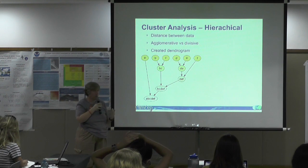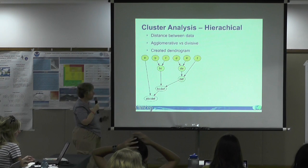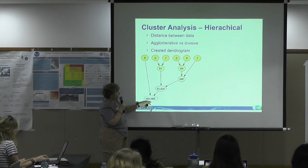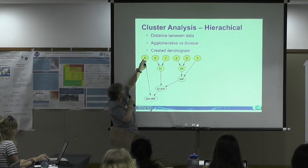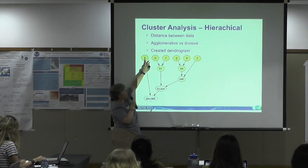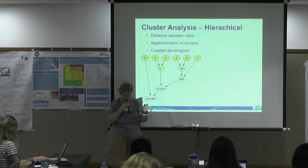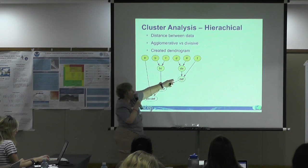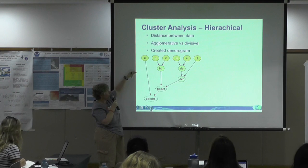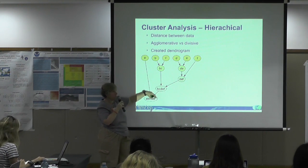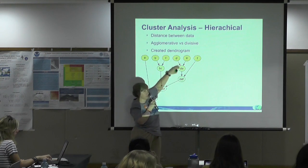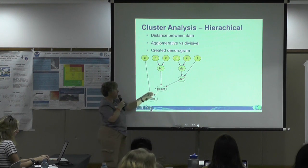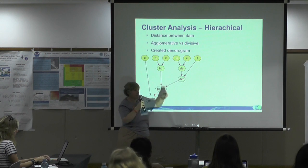The most common form of cluster analysis people come across is probably the dendrogram, which is hierarchical. There are two ways to build these: agglomerative, where you start with everything separate and find things that bring them together to build ever-larger clusters — at some point you draw a line and say 'these are my clusters'; or divisive, used in genetics and taxonomy, where everything is pulled together and then branched out to get separate clusters.